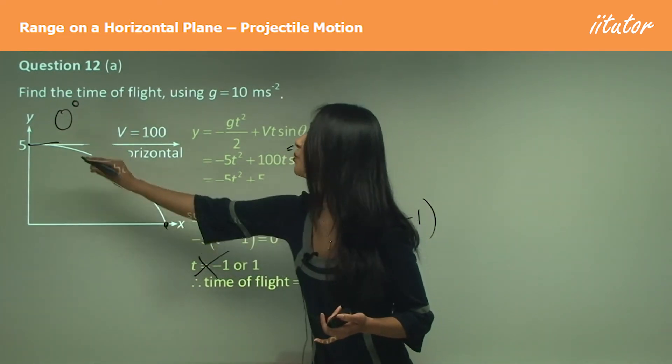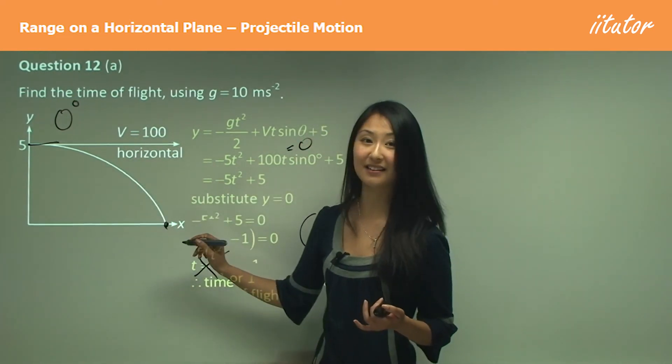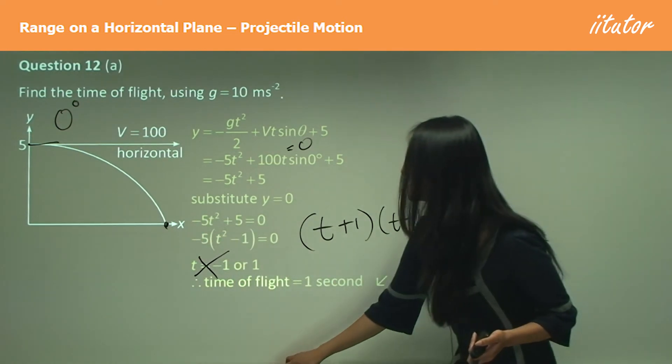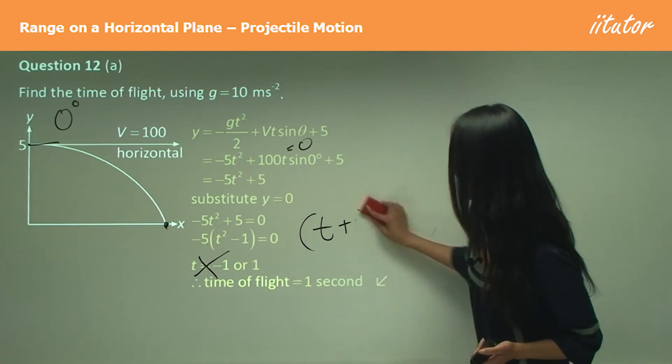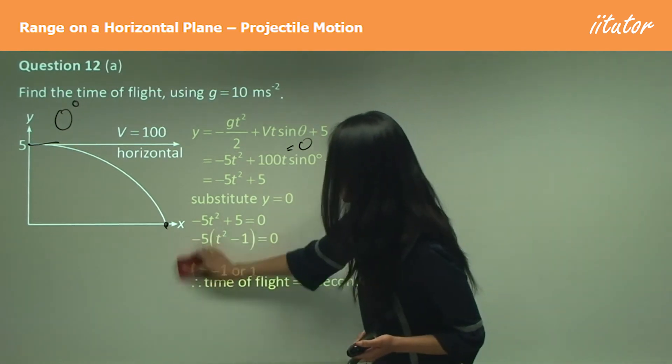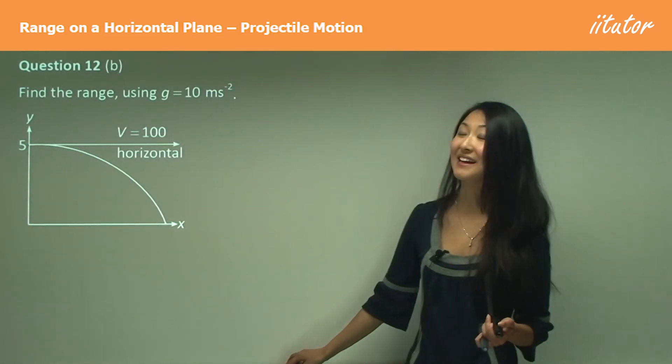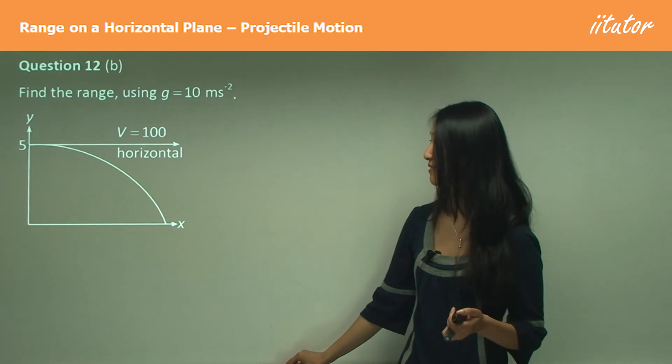But we do consider that one, so we say the time of flight is one second. So this here is one second before it hits the ground again, and we don't consider that because we can't have negative time. So in this one we've just worked out the time of flight was one second, and now we've worked out the time of flight we can use that to work out the range, the horizontal range.